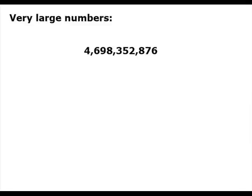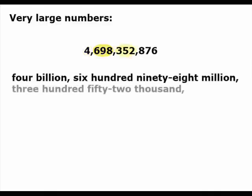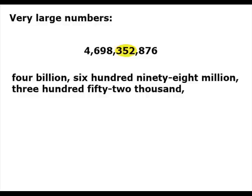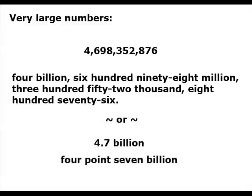So remember, when you see a very large number, count unit by unit. For example: 4,000,698,352,876. It's very unlikely that you will ever need to say a number this large. If you do, it's much easier to shorten it and round up — for example, to 4.7 billion.